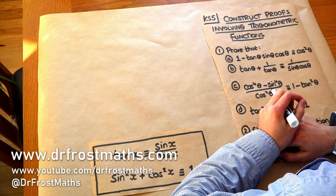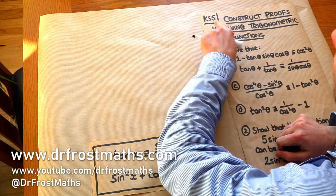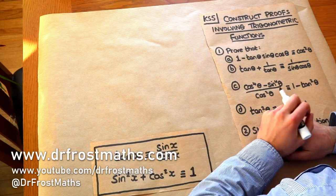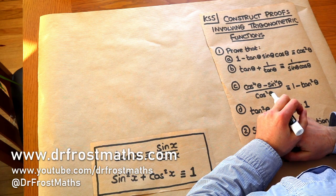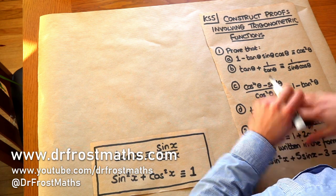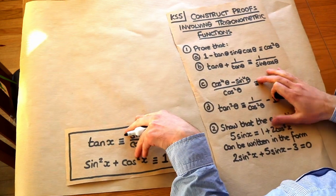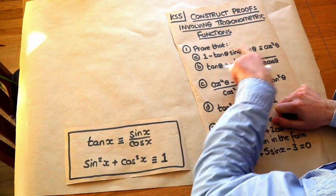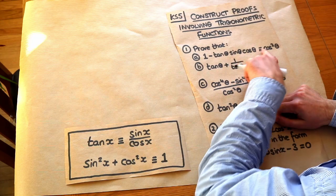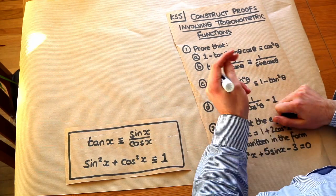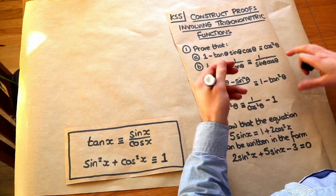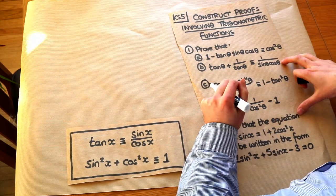Hello and welcome to this Dr Ross Maths video on Key Stage 5, Constructing Proofs Involving Trigonometric Functions. In this video we're going to be covering how we can prove two expressions are equal on either side of an identity or an equation.